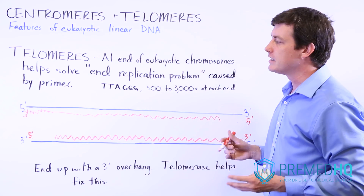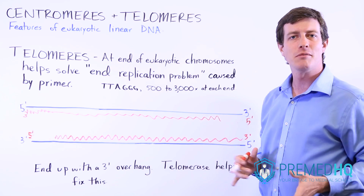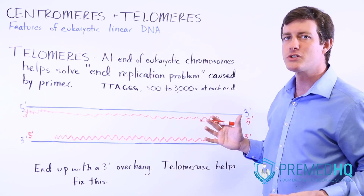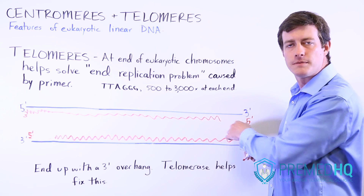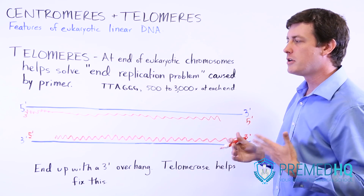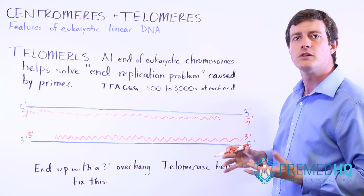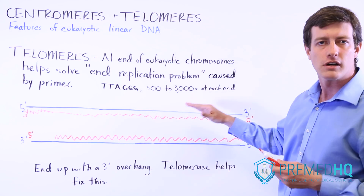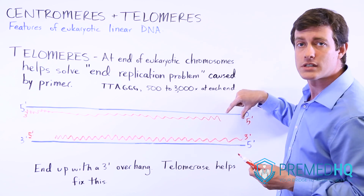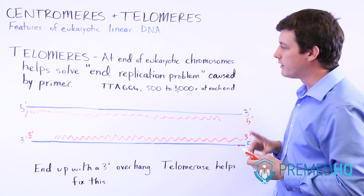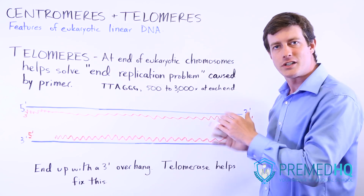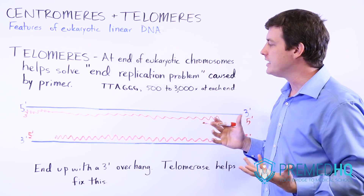What this means is that every replication cycle — every time you replicate a chromosome — you're going to lose a little bit of material. Initially this won't be too much of a problem, but as you continue, the primer will take off larger and larger chunks. More and more sequence will not be replicated due to the fact that you needed to lay down a primer, and eventually after enough cycles, you'll end up with much shorter chains of DNA.